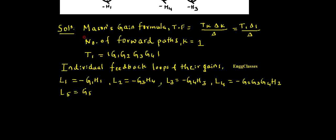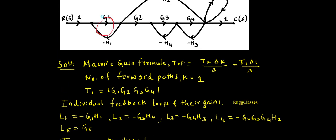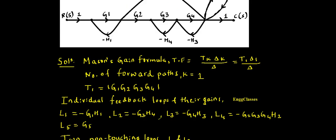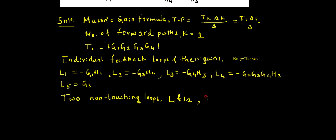Now I need to consider two non-touching loops. Looking at L1 and L2 — are they touching? No, they are non-touching. So L1 and L2 is the first pair of two non-touching loops. Similarly, checking further: L1 and L3 are also two non-touching loops.